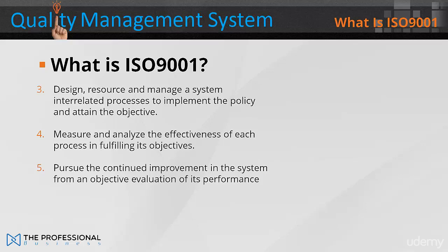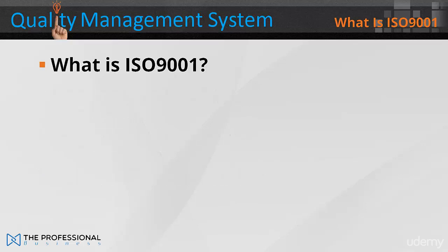Four: measure and analyse the effectiveness of each process in fulfilling its objectives. Five: pursue the continual improvement of the system from an objective evaluation of its performance.